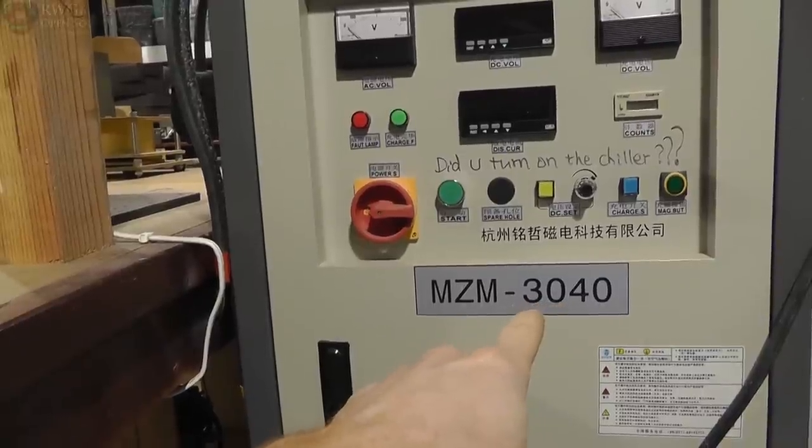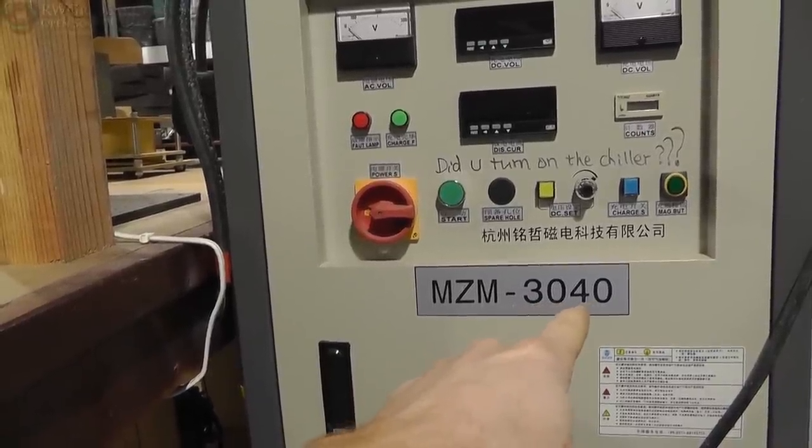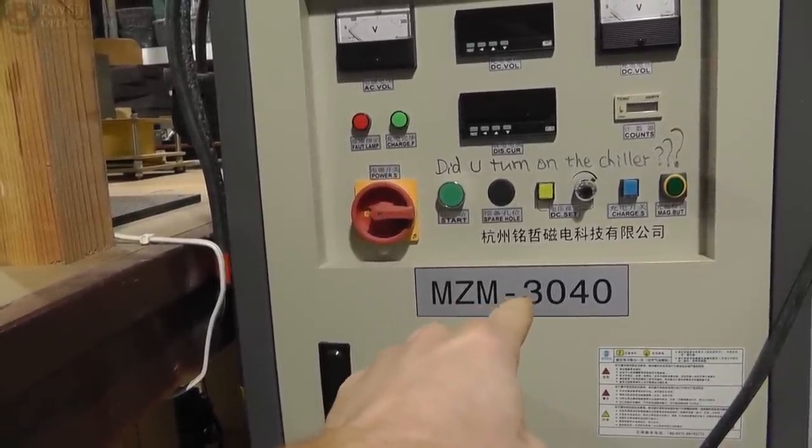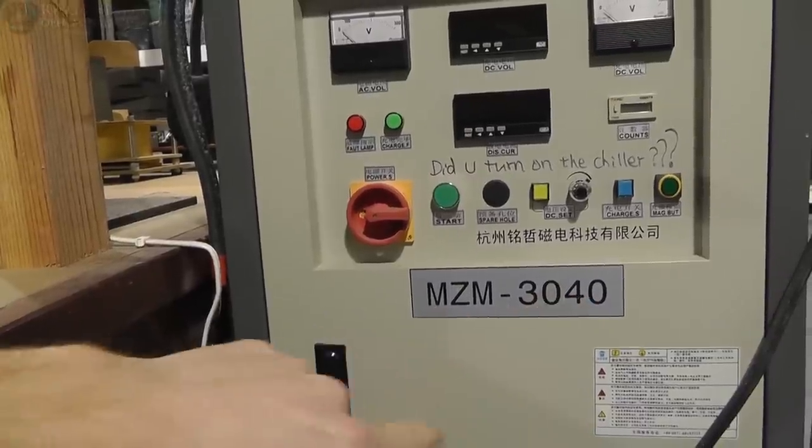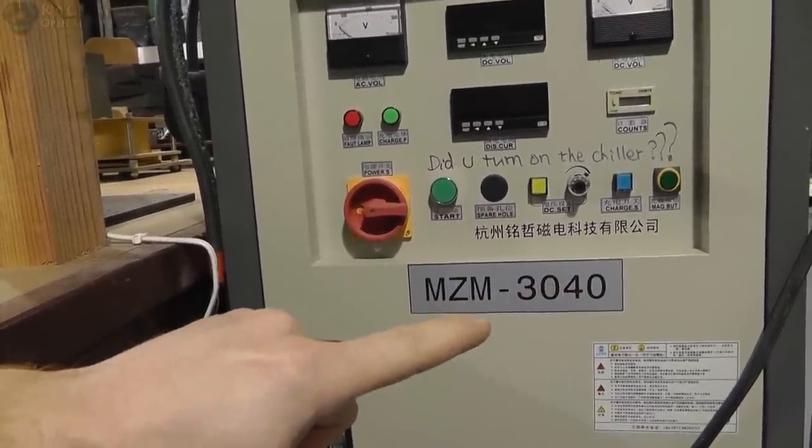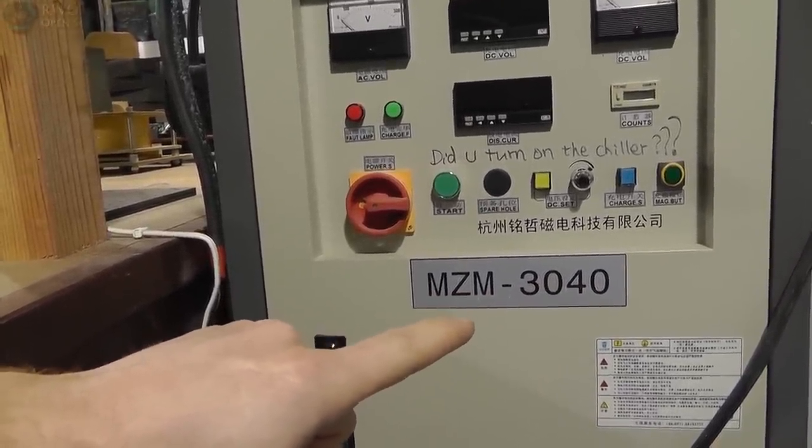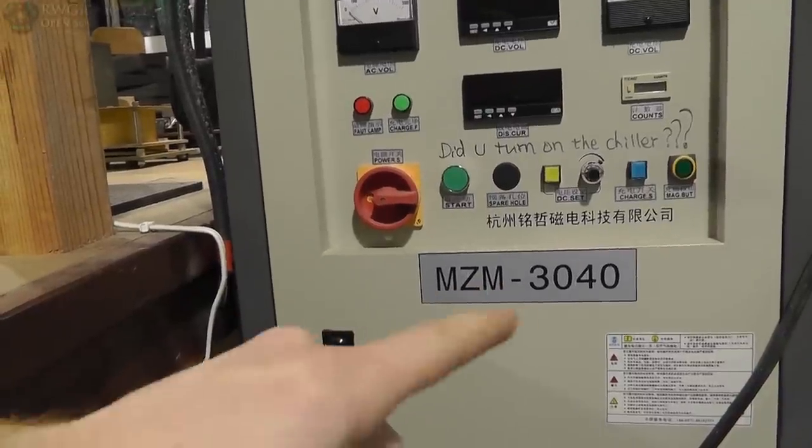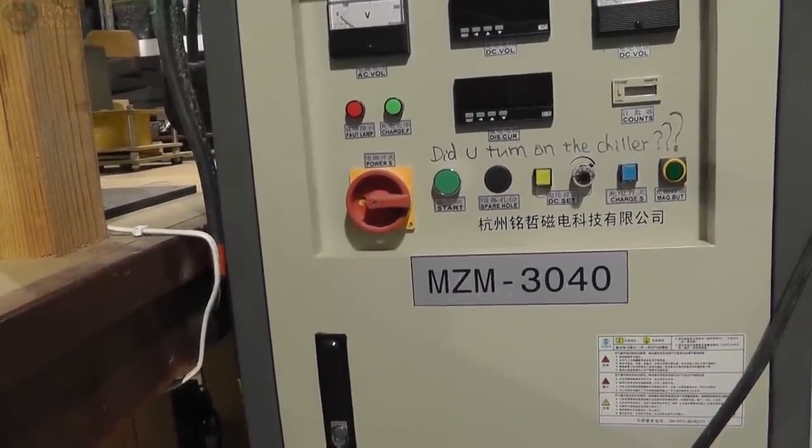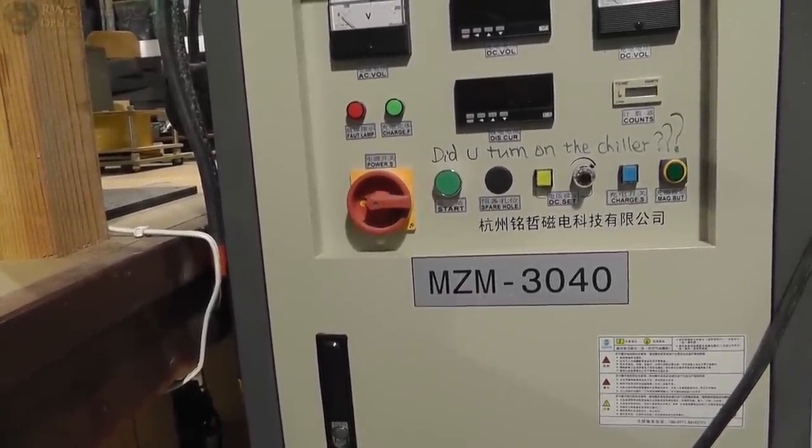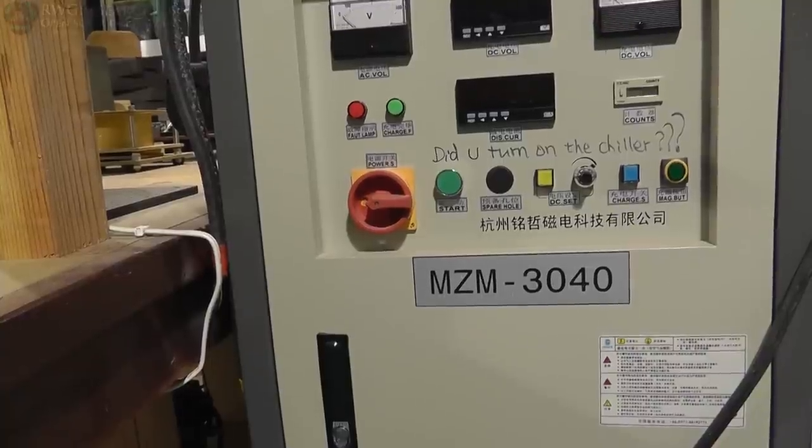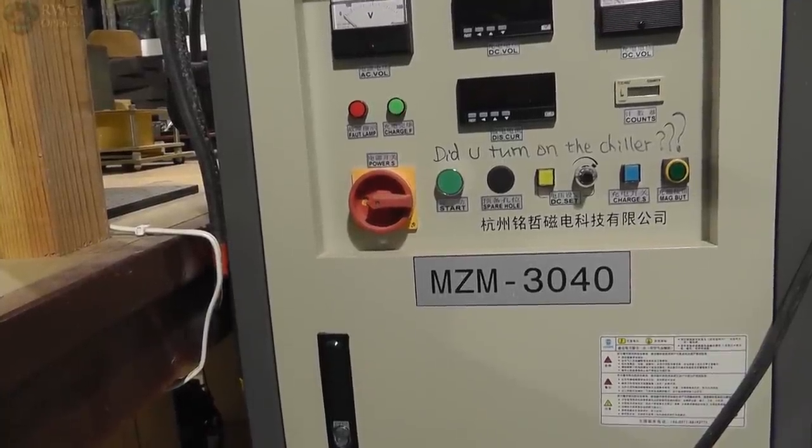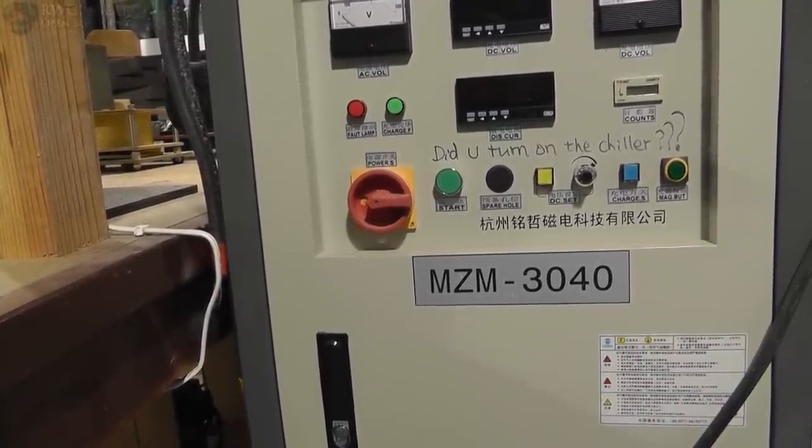30 is the voltage, 40 is the capacitance. So that's 3000 volts capacity at 4000 microfarads, or UF, 3000 volts. Okay, that's the maximum that this machine will put out.